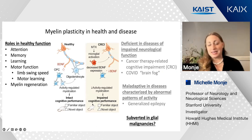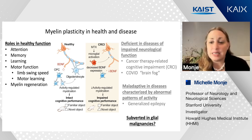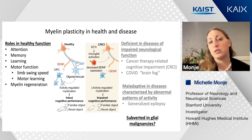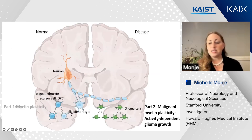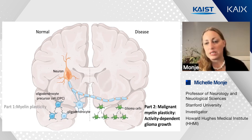So myelin plasticity is important for neural circuit function. Loss of myelin plasticity can contribute to diseases of cognition, and aberrantly increased myelin plasticity can contribute to diseases of network hypersynchrony like epilepsy. But could these really powerful neuron-glial interactions be subverted in the context of glial malignancies? I'd like to now focus the rest of the talk on the idea of malignant myelin plasticity—of activity-dependent growth of glial malignancies.